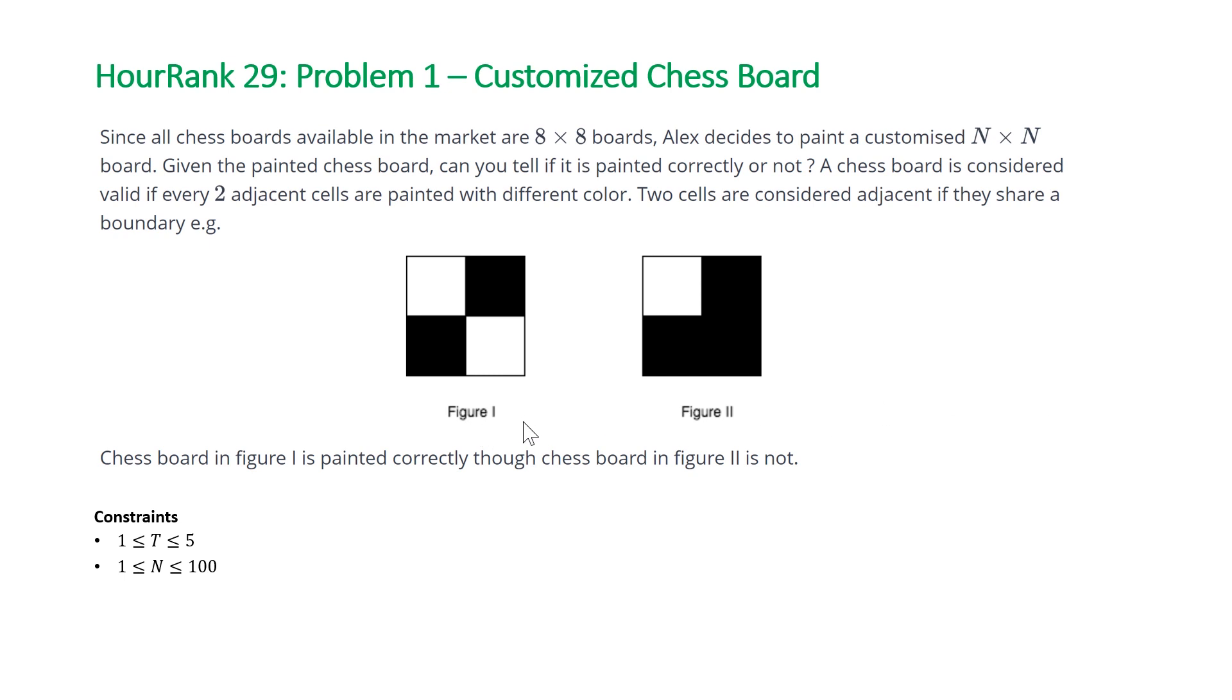And then it shows you two figures, figure 1 and figure 2, and states that the chessboard in figure 1 is painted correctly, although the chessboard in figure 2 is not.